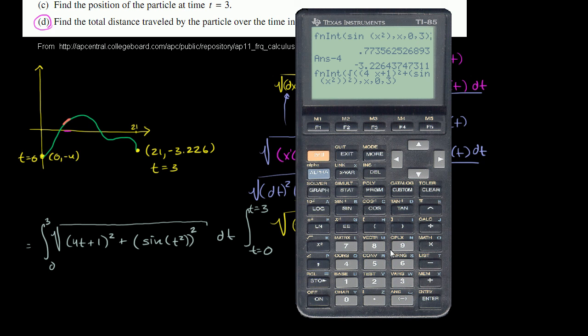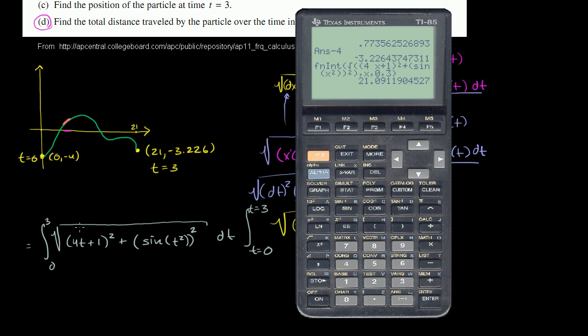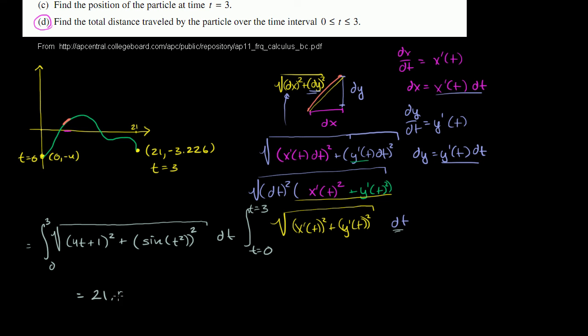Let the calculator do all the work here. We get 21.091. That's the entire arc length, the distance that this particle traveled.